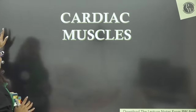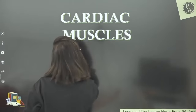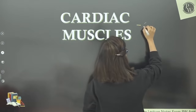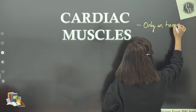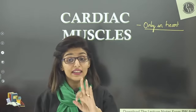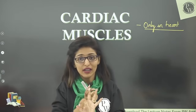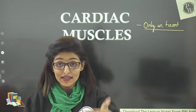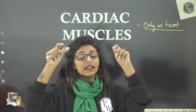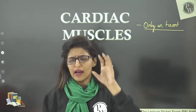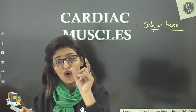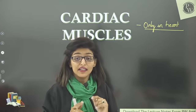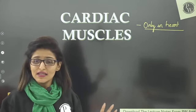Now coming to cardiac muscles. From the name, they are found only in the heart. They are found only in the myocardium — the middle layer of the heart wall. Epicardium and endocardium have squamous epithelium, while myocardium is made of muscle. The variation in heart wall thickness — auricles vs. ventricles vs. left ventricle — is all due to the myocardium, which is made of cardiac muscles.